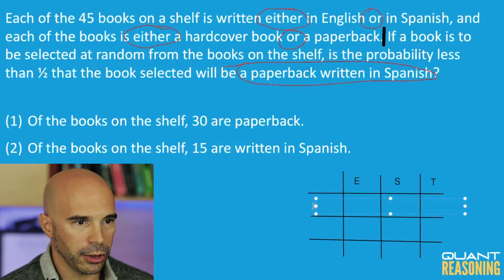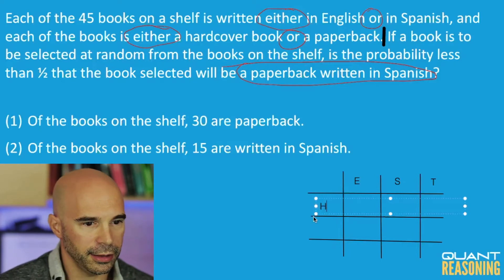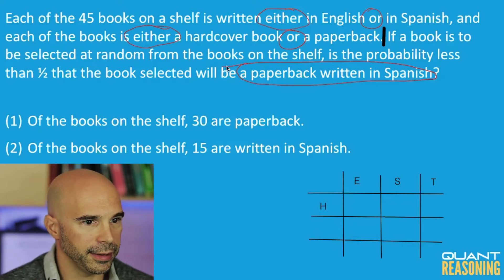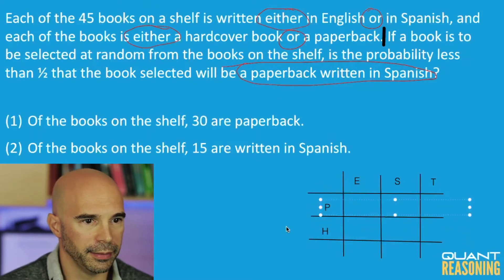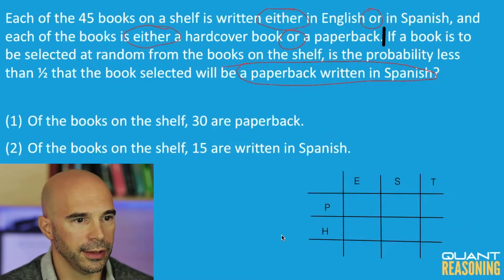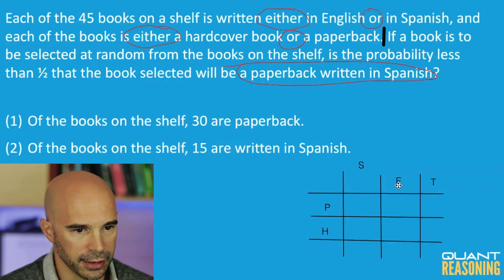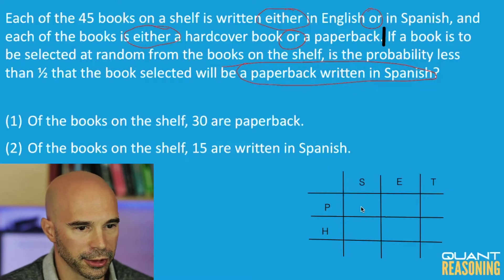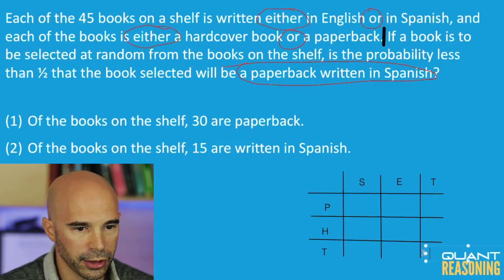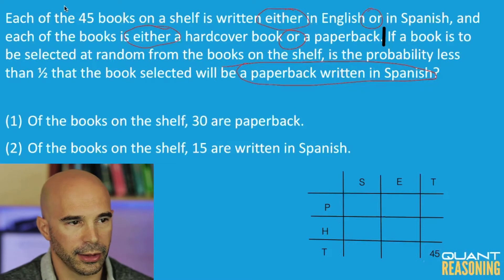The same goes for hardcover and paperback. I'm going to put paperback first to match what I said earlier about the position, because the question they're asking about is in the top left corner, and there's the total. I can also fill in that the total number of books is 45. Now I'm ready to keep reading.